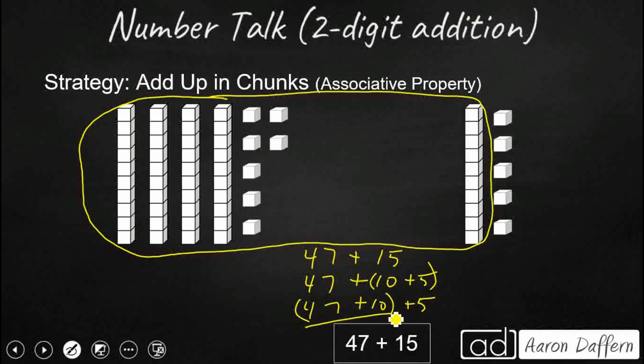So 47 plus 10, well that's just 47 and 10 more, so that's 57. Then I need to add the 5. 57, add 5. That's still going to give me my 62. So that's another way we can do it.